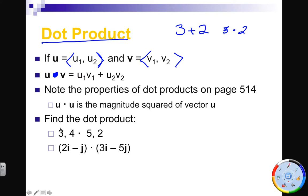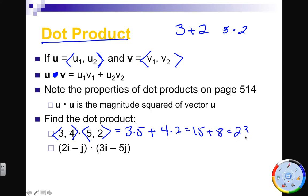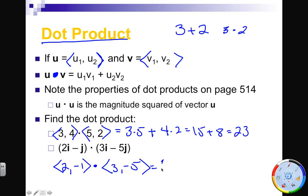Let's do a quick couple of examples. The dot product is super simple. For example, <3, 4> dot <5, 2> is 3 times 5 plus 4 times 2, which is 15 plus 8 = 23. For vectors in i and j form: 2i minus j is just the vector <2, -1>, dot product with <3, -5> is 2 times 3 = 6, plus negative 1 times negative 5 = 5, giving 11. Super easy!